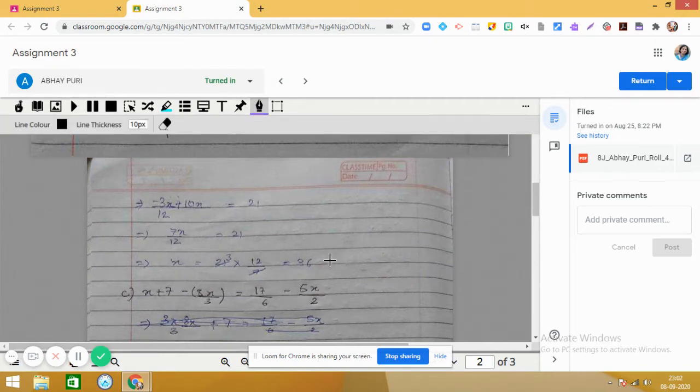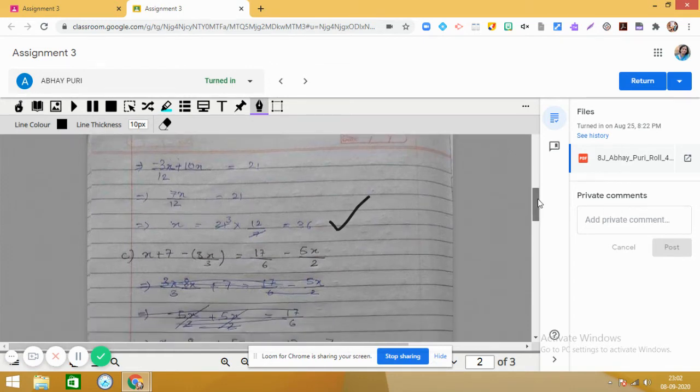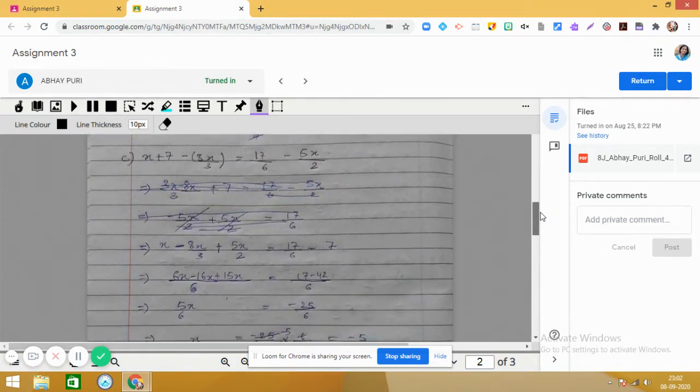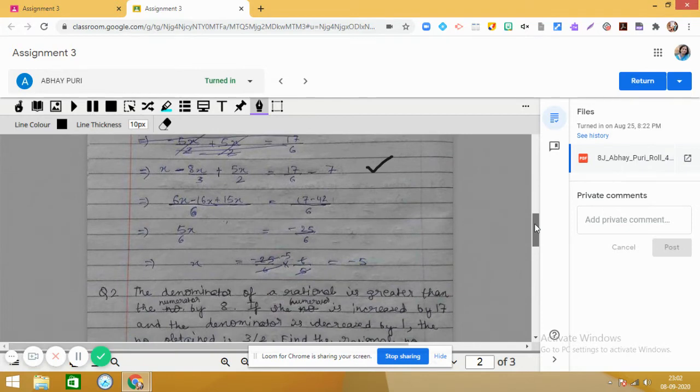Coming to the next one: x + 7 - 8x/3 = 17/6 - 5x/2. So here also you have brought terms containing x to the left hand side, so you get x - 8x/3, and you see here it is -5x/2 on the right hand side. It can be brought to the left hand side, so it becomes +5x/2.